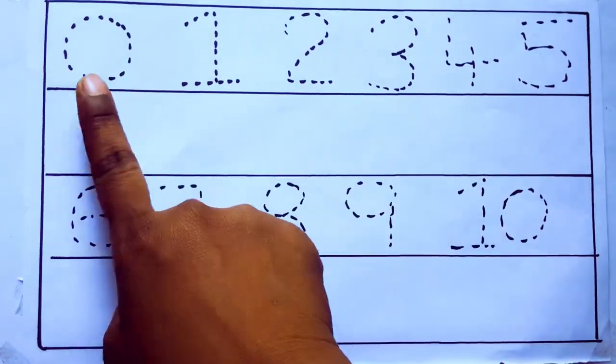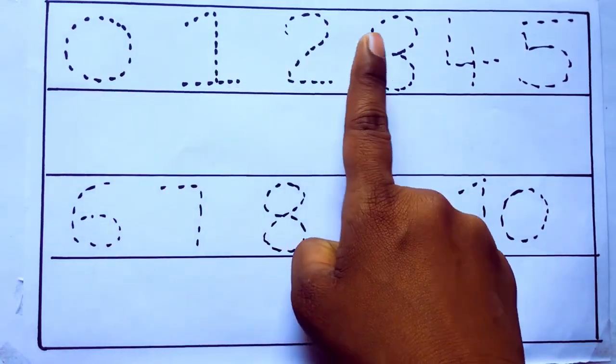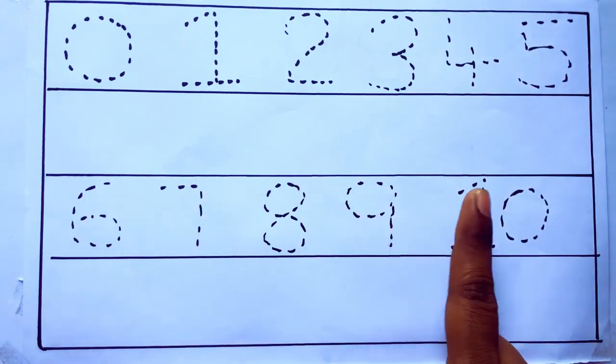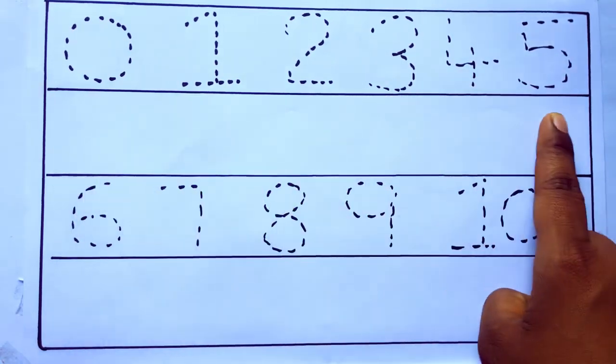0 to 10: 0, 1, 2, 3, 4, 5, 6, 7, 8, 9, 10, and rewriting the numbers.